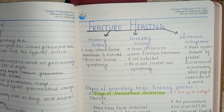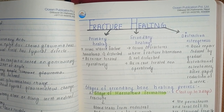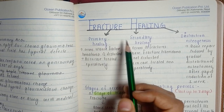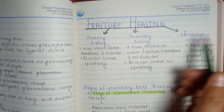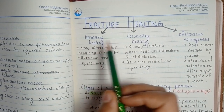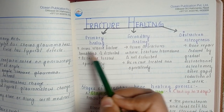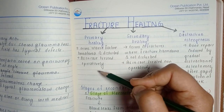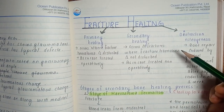Let us discuss fracture healing today. Fracture can heal by primary healing, that is by primary intention, secondary healing by secondary intention, or by distraction osteogenesis. In primary healing, the hematoma is disturbed and the fracture is treated operatively.